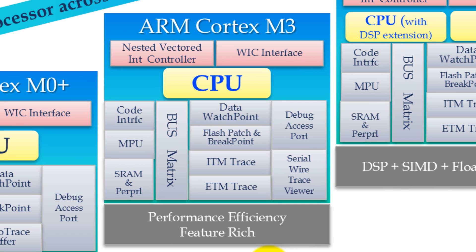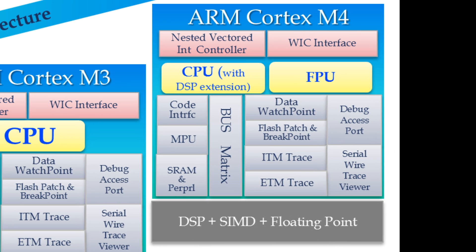The ARM Cortex-M3 adds more features over the Cortex-M0 sub-series. The main features include one-cycle 32-bit hardware multiply, 2-to-12 cycle 32-bit hardware divide, and saturated math support. It has a three-stage pipeline with branch speculation, only 12-cycle interrupt latency, 1.25 DMIPS per megahertz high performance, and also ITM and ETM trace. The Cortex-M3 is performance-efficient with many more features than its predecessor.